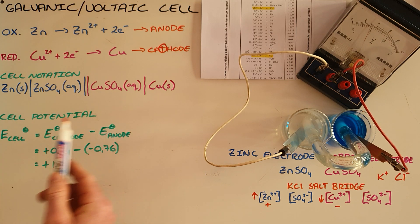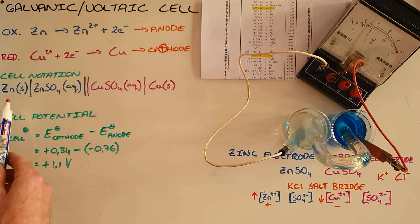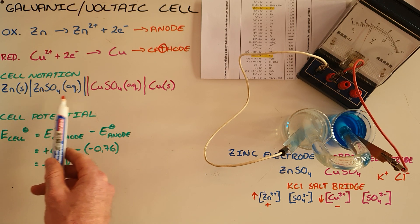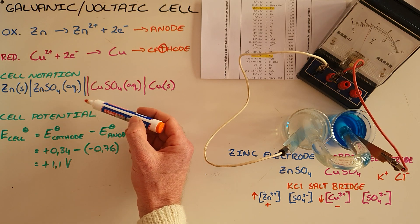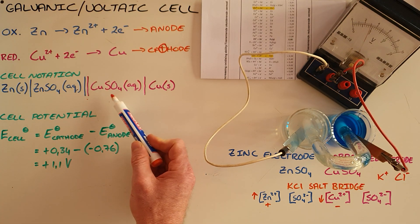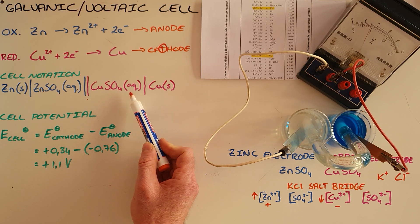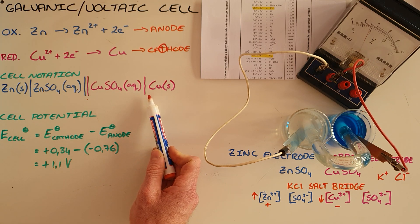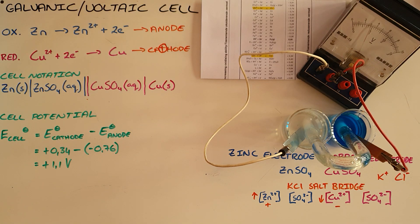We can also express this in cell notation, which says that the anode electrode is zinc solid. The anode electrolyte is zinc sulfate. The double line here represents the salt bridge. The cathode electrolyte is copper sulfate in aqueous solution. And finally, the cathode electrode being copper solid.